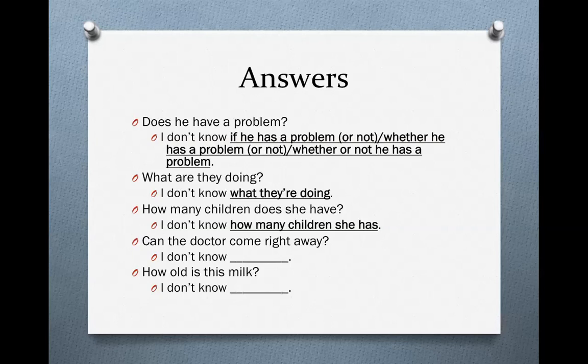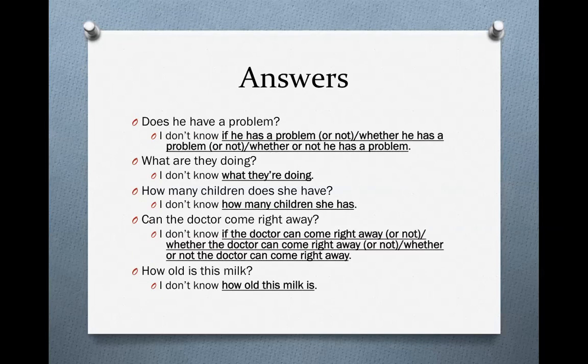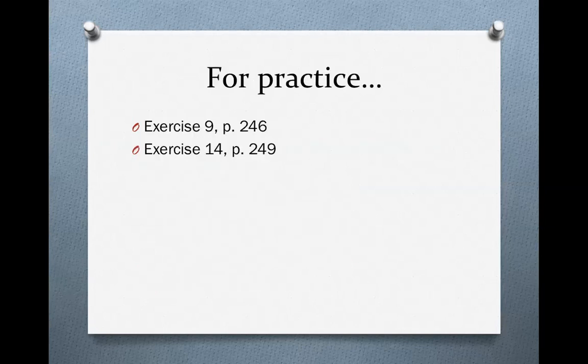'Can the doctor come right away?' Here we have a yes-no question, so we have a lot of possibilities: 'I don't know if the doctor can come right away,' 'I don't know if the doctor can come right away or not' — all of these possibilities are correct and equally possible in English. And finally, 'How old is this milk?' — easy question word — so we say: 'I don't know how old this milk is.' Don't forget subject before verb. For more practice, open your book and do exercise 9 on page 246 and exercise 14 on page 249.